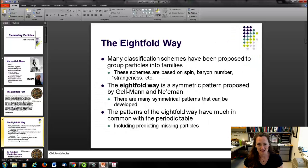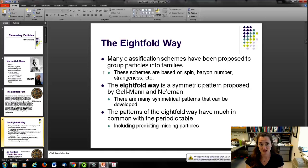So the Eightfold Way is classification schemes that have been proposed to group particles into families. And the schemes are based on their spin, baryon number, strangeness, and now charmness, and so on. It's a symmetric pattern proposed by Gell-Mann and Niemann. This is similar to the idea of what was done with the periodic table originally, where they laid out the structure and then could predict vacancies in the pattern and postulated the existence of elements that hadn't been discovered yet. Much the same way that happened with the periodic table, Gell-Mann did that with the Eightfold Way.